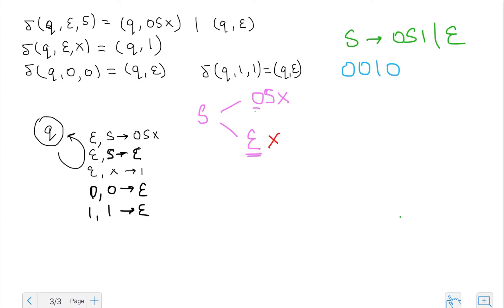Now we continue with the branch on top. I have a zero as my stack top and zero as my input symbol, so I'll be taking rule number four, which converts the zero at the top of my stack to an epsilon.